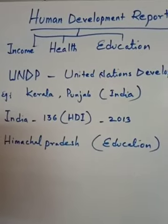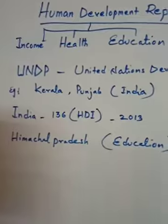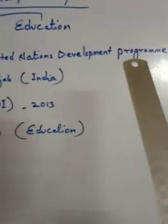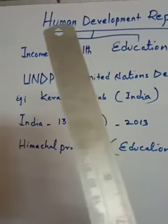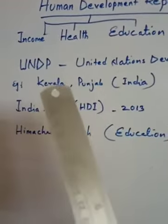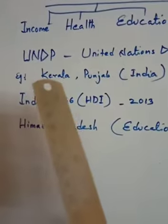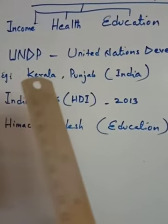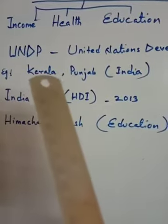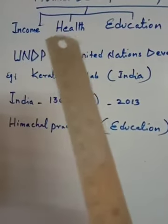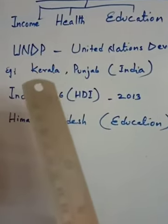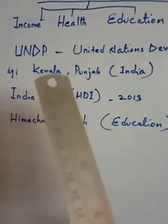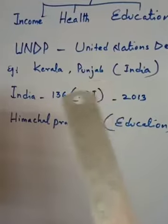The Human Development Report is published by UNDP, meaning the United Nations Development Programme. In our country, Kerala and Punjab are in higher positions because they have very high standings in education, health, and income. That's why they got better positions and better rank.